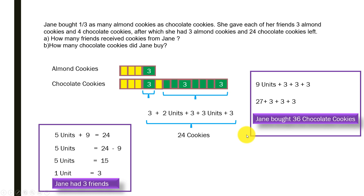I hope this is clear. This is how we use models to solve this problem. If you understand how the unit size correlates to the number of friends, as explained in the previous diagrams, then it becomes easy to understand and solve the problem. We used the model method; next we are going to use the algebraic method of solving this problem.